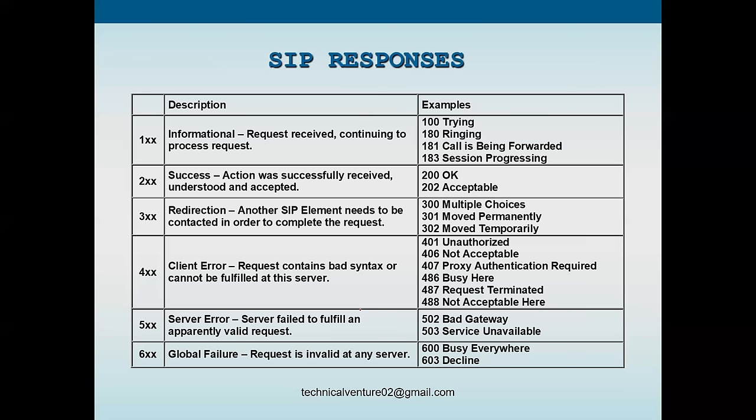Common 4xx responses include 401 Unauthorized (authentication failure), 406, 407, and 486 Busy Here when the other party is busy. 487 is Request Terminated. 5xx means server error - the server failed to fulfill the request - for example 502 Bad Gateway or 503 Service Unavailable. 6xx is a global failure - the request is invalid at that server - such as 600 Busy Everywhere or 603 Decline.